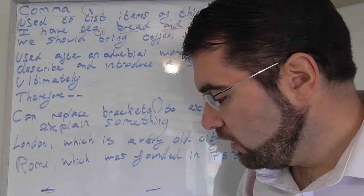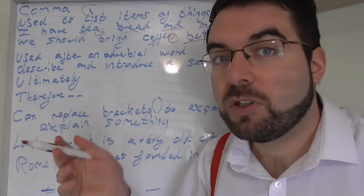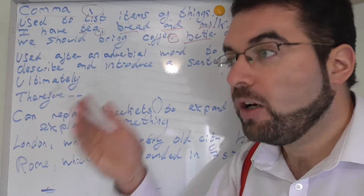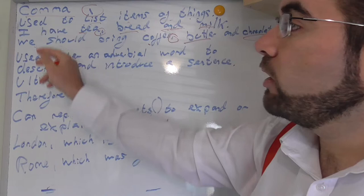How cool is that? So we use a comma to space things out in a list. We should bring coffee, comma, butter and chocolate. Coffee, comma, butter, comma, pen, comma, bread, comma, milk, comma, tea and chocolate. Makes sense.